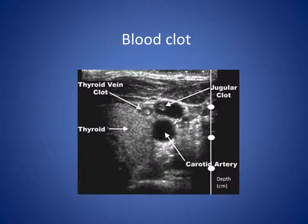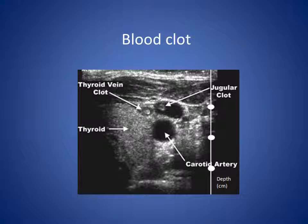Blood clot, on the other hand, is relatively dense and has quite a strong echo. It is important to look for the presence of clot in any vessel that has been considered as a target for ultrasound-guided venous access.